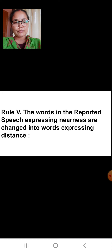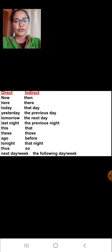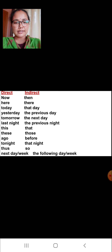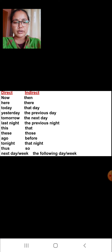Rule number five: the words in the reported speech expressing nearness are changed into words expressing distance. For example: 'now' changes to 'then'; 'here' to 'there'; 'today' to 'that day'; 'yesterday' to 'the previous day'; 'tomorrow' to 'the next day'; 'last night' to 'the previous night'; 'this' to 'that'; 'these' to 'those'; 'ago' to 'before'; 'tonight' to 'that night'; and 'thus' to 'so.'